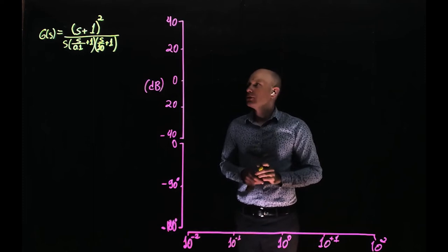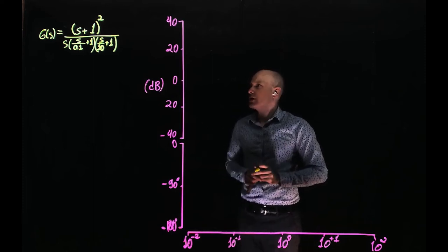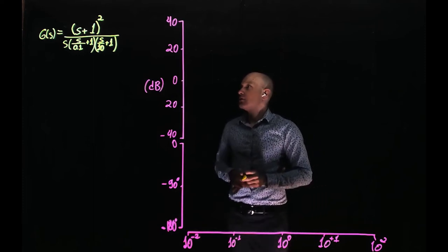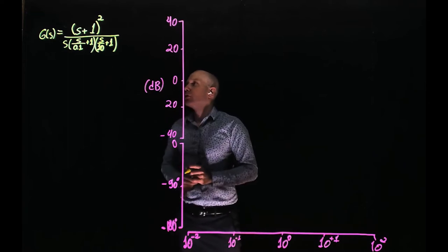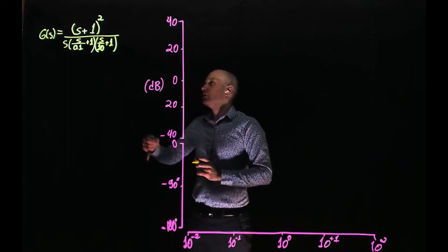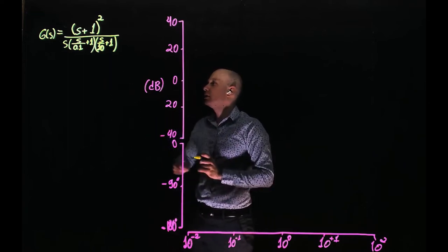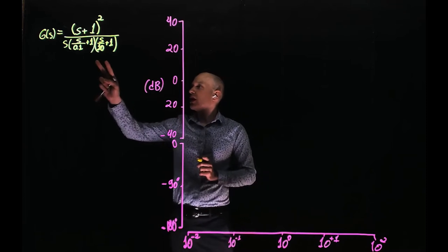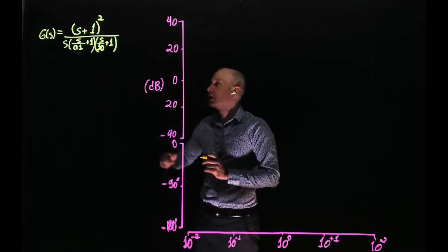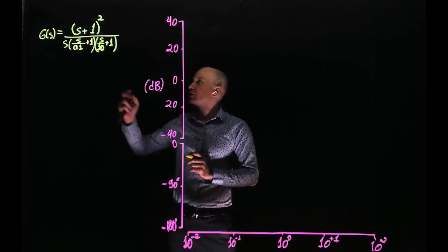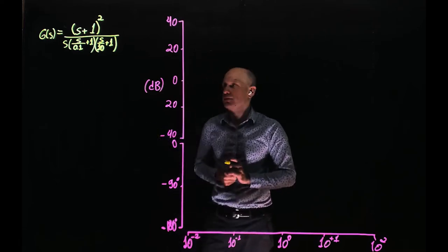In this example, we are looking to draw the Bode plot of the function G. This function has two zeros and three poles. The zero has a cutoff frequency at 1 radian per second, the poles have cutoff frequencies at 0.1 and 10 radians per second, and there is another zero and another pole at the origin.